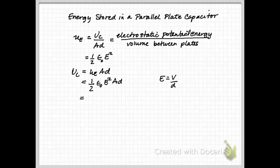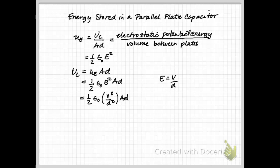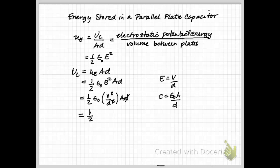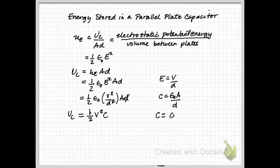Plugging in epsilon naught and the equation for capacitance, you can see the d terms cancel, and we end up with one-half C V squared. So the potential difference squared times the capacitance is the potential energy stored in the capacitor. And remembering that capacitance equals charge divided by voltage, you can rearrange to get the other equation varieties.